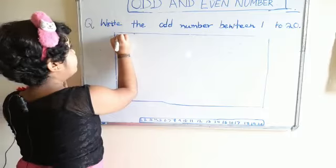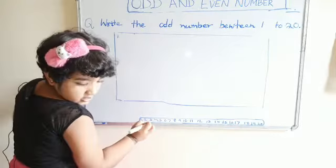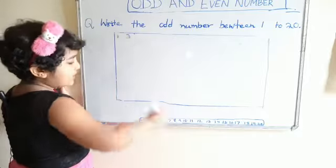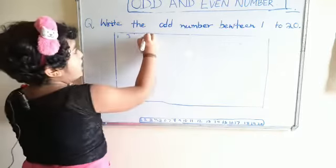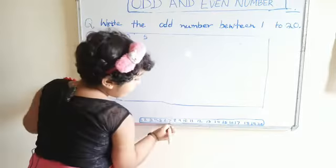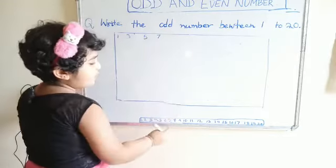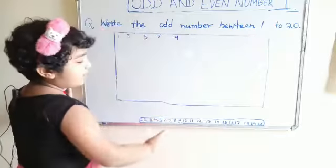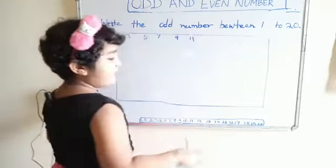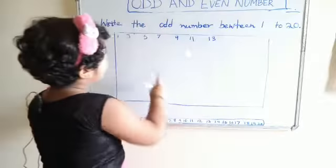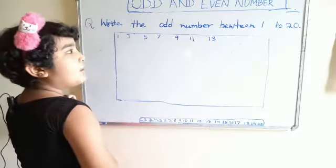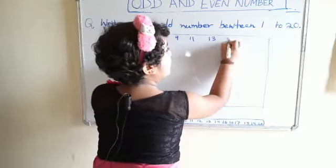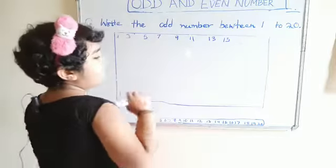Our first odd number is 1. फिर 3 — 3 हमारा odd number है. Then our odd number is 5. Then our odd number is 7. Then our odd number is 9. Then 11, then 13. वैसे 1 के साथ 1 लग गया — 15 is our odd number. वैसे ही 17.